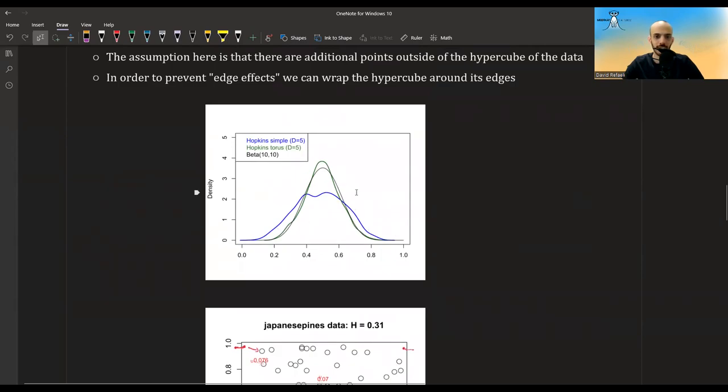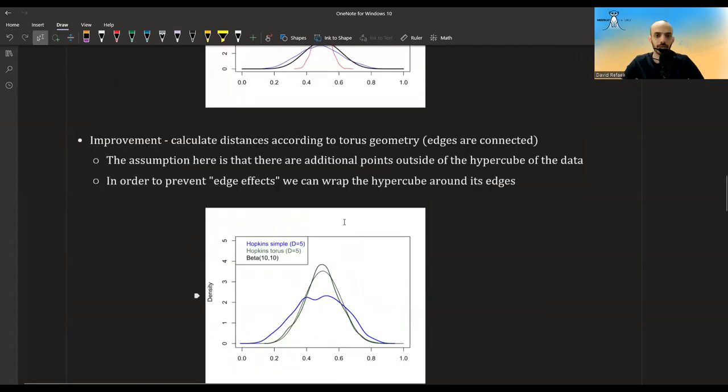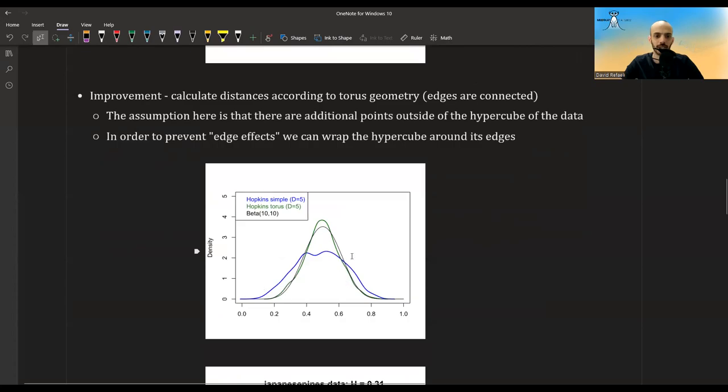Here you can see again in black, the true distribution. In blue, you see the simple Hopkins statistic where the distances are calculated without the torus geometry. You see it's kind of off. If you use torus geometry, you see you get a much better result with the green. And both this graph and this graph are from simulations. You create new data and you sample new subsets of the data, and you calculate the Hopkins statistic each time, and then you show the distribution of the Hopkins statistic.